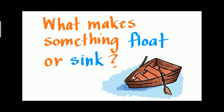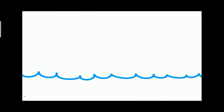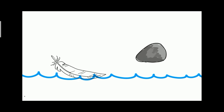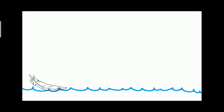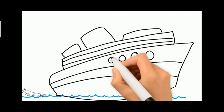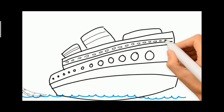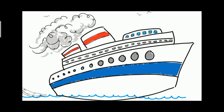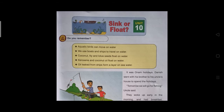What makes something float or sink? A feather will float on the water and a rock will sink. But a big ship, which is made of iron, will float on the water — it is heavy and large, but it displaces more volume of water, so it can float.